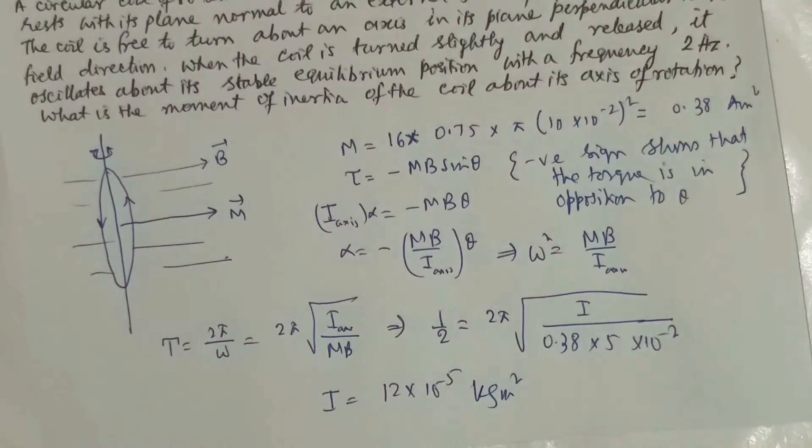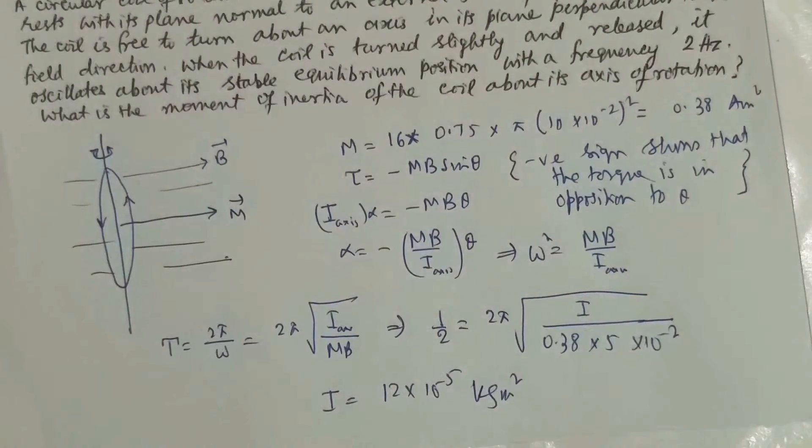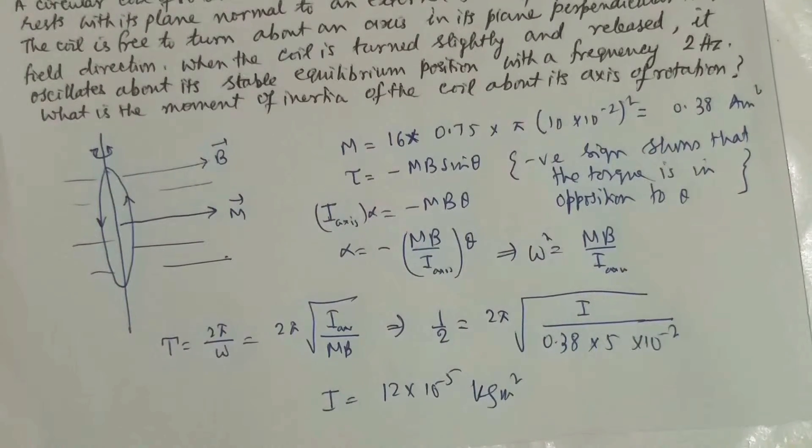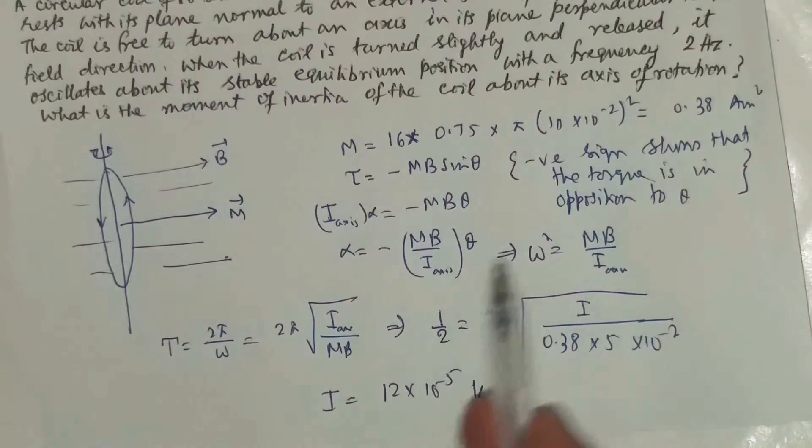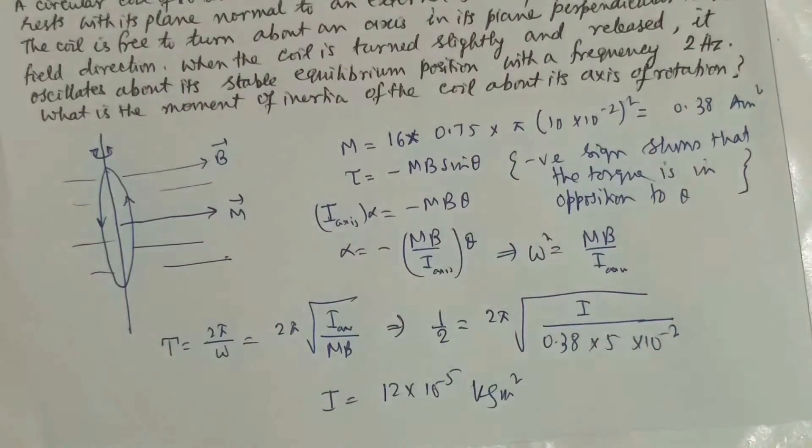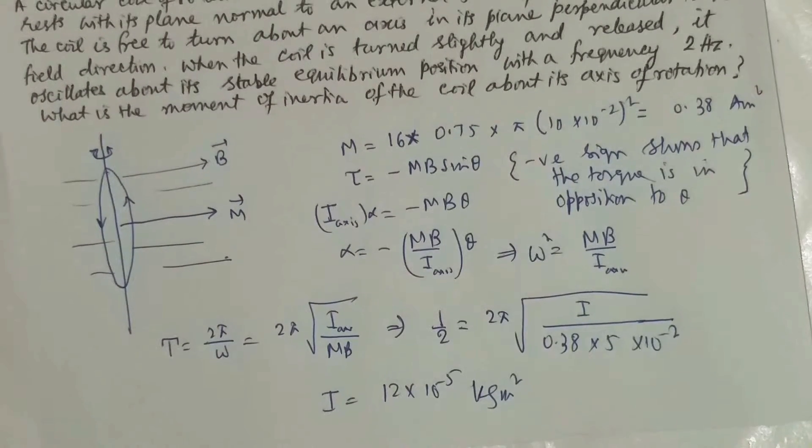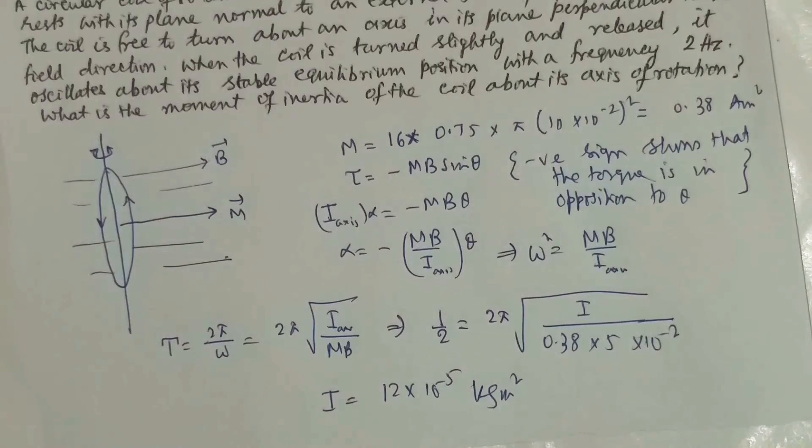Therefore, as per the data given, the moment of inertia of this ring about its diametrical axis in same plane, which you use to calculate in the rotational concepts, here in this torque related concept of magnetic field, it is coming to be as moment of inertia 12 into 10 to the power minus 5 kg meter square.